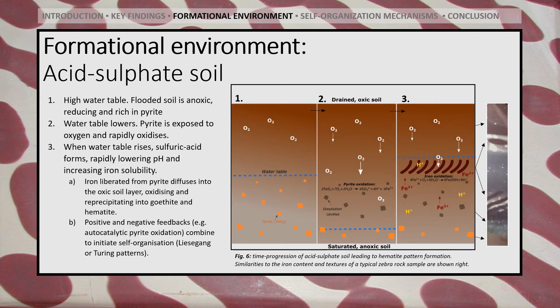The development of acid sulfate soils is a common and contemporary problem that often arises in stagnant waterlogged soils. The flooded soils are usually anoxic and reducing, thus leading to the formation of pyrite. As the water table lowers, pyrite is exposed to oxygen and undergoes oxidation, increasing the acidity and ferrous iron content of the surrounding groundwater. The aqueous ferrous iron can then diffuse back into the oxic zone, resulting in the oxidation and precipitation of iron oxides. Depending on the feedback systems involved, this counter-diffusion of iron and oxygen could very easily result in the precipitation of iron banding through self-organisational systems such as Liesegang banding or Turing instabilities.